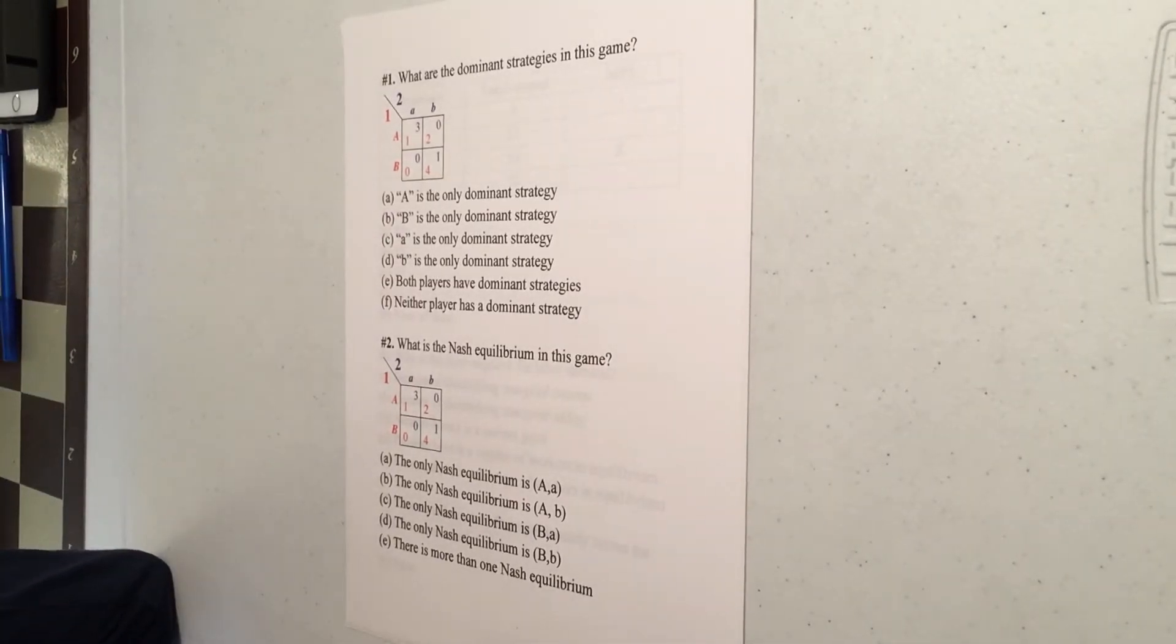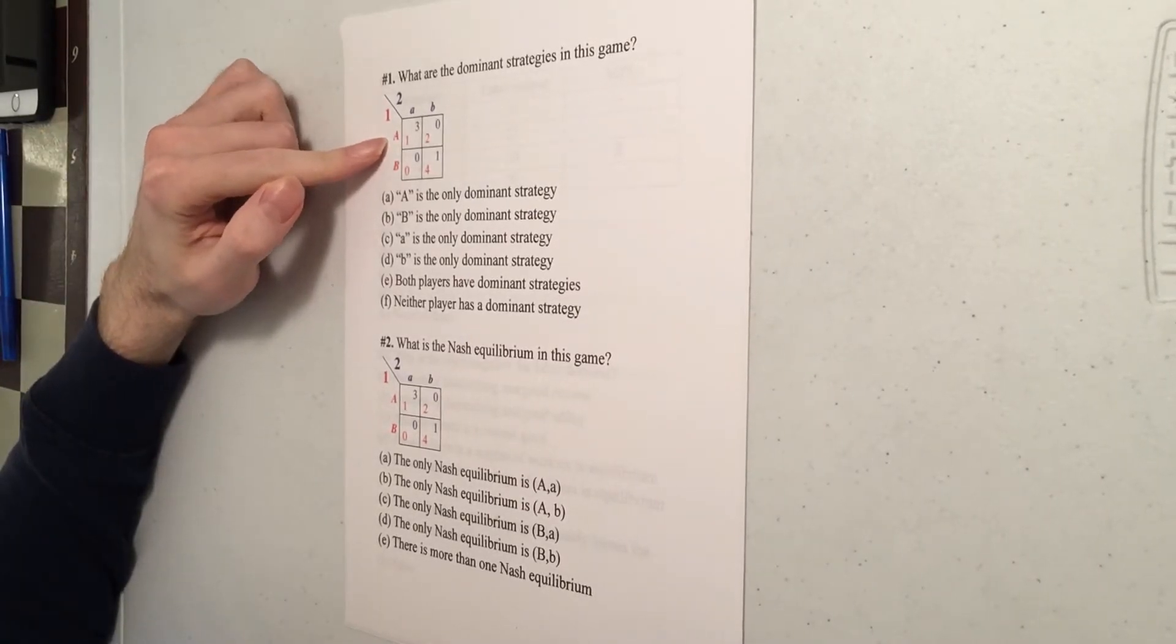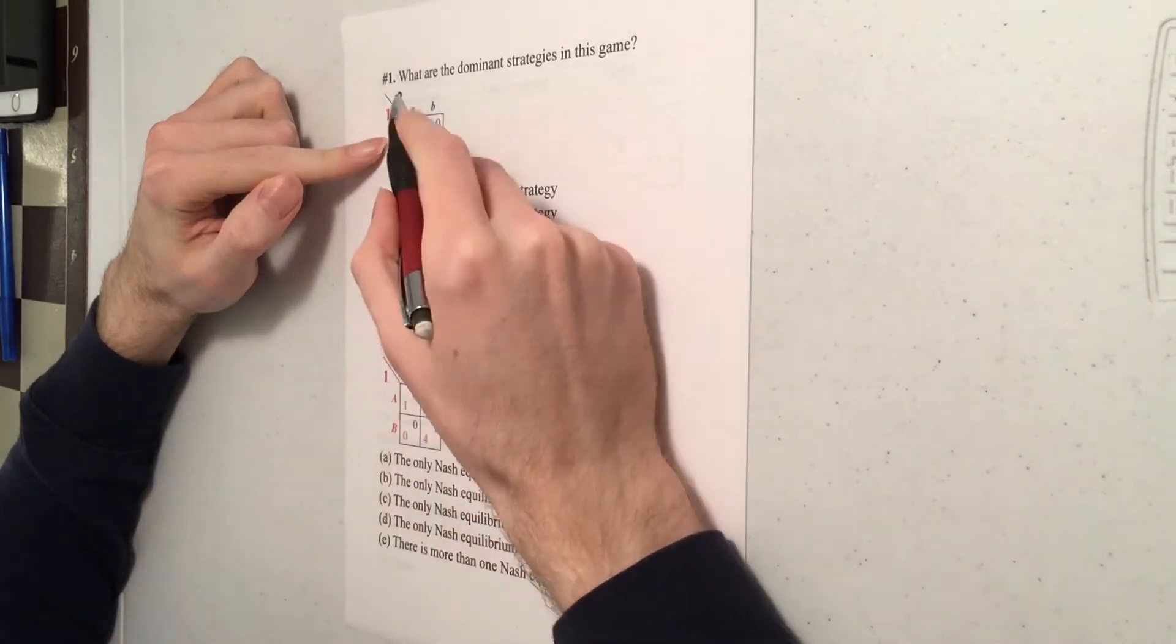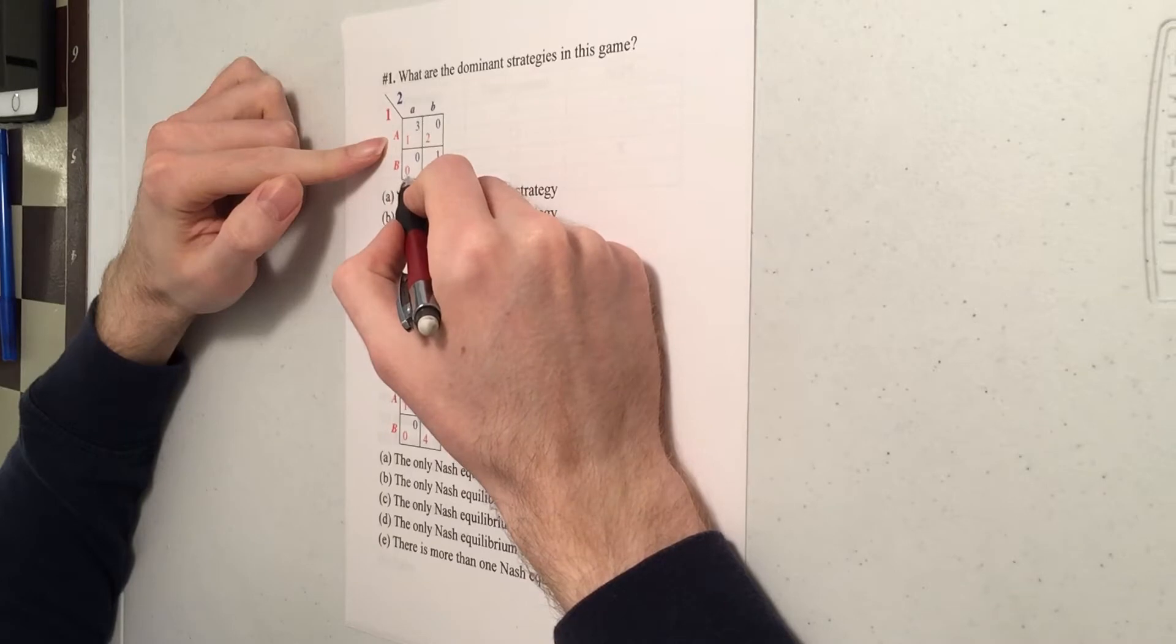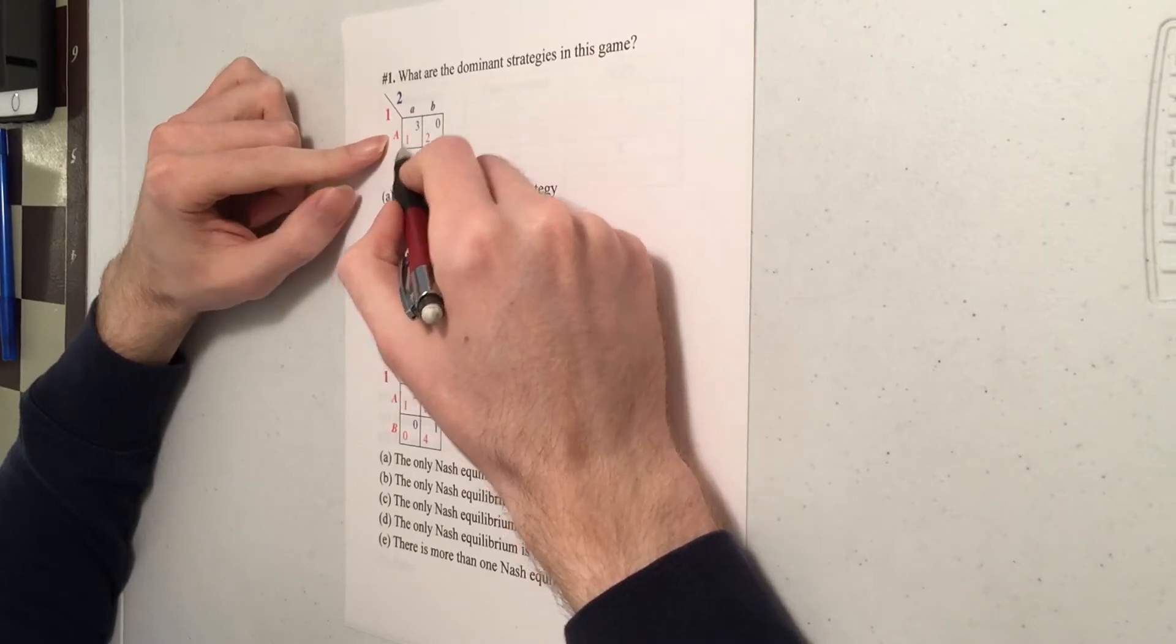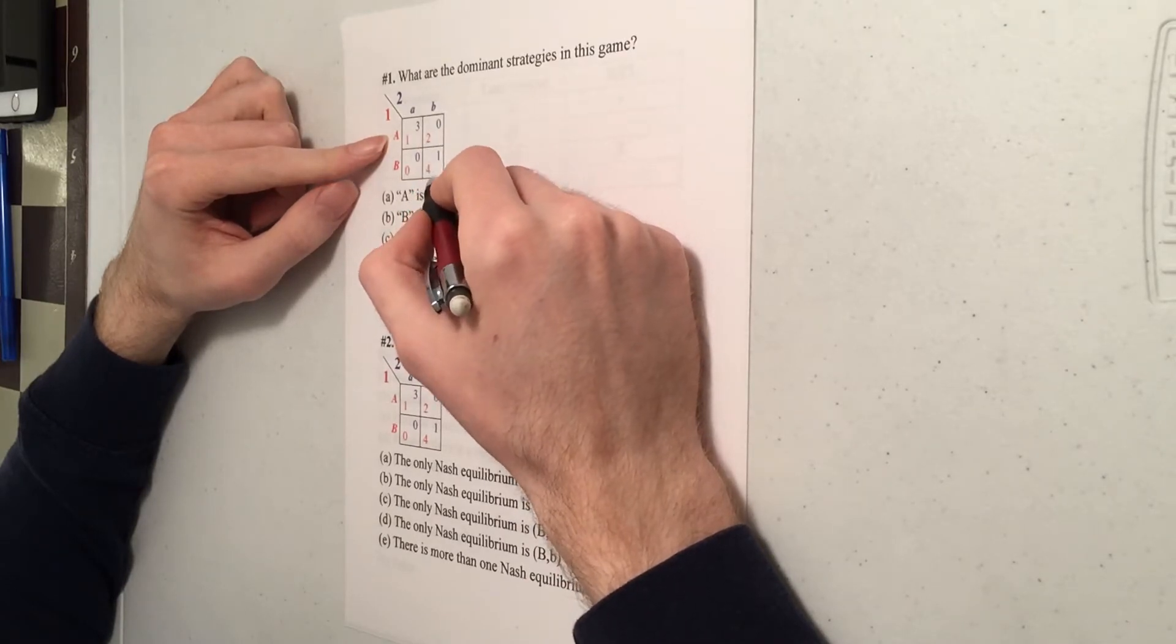I'll start by looking at player one's perspective. So is A a dominant strategy? Well, if player two is playing little a, it's best to play big A. If player two is playing little b, in that case it's better to play big B.